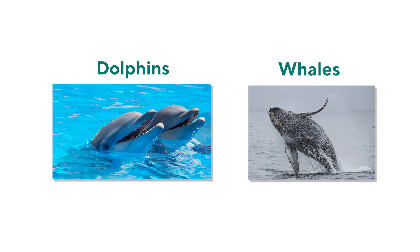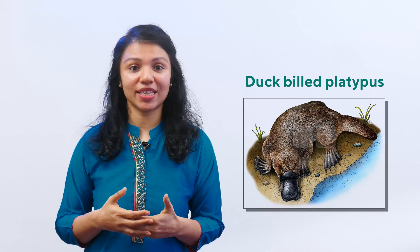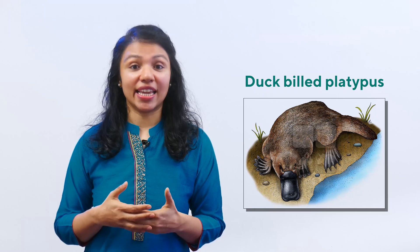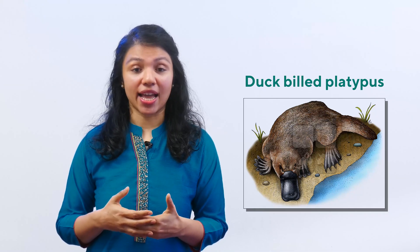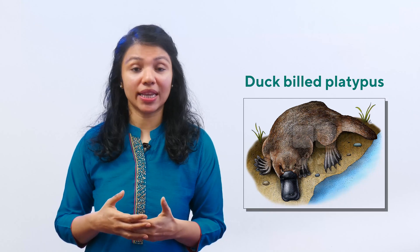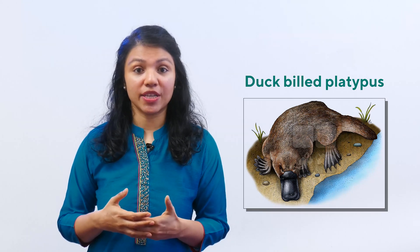There are exceptions too. Animals like dolphins and whales may look like fish, but they are actually mammals — they give birth to their young ones. Another interesting exception is the duck-billed platypus. They lay eggs, but when the eggs hatch, the platypus feeds the babies with its own milk. So the platypus has both the characteristics of an egg-laying animal and a mammal. Interesting, isn't it?